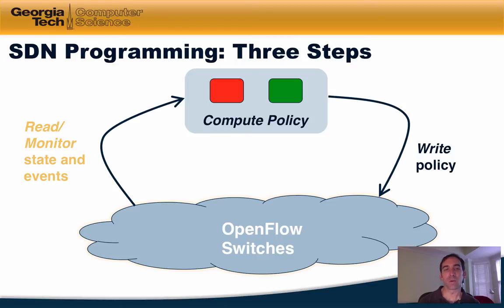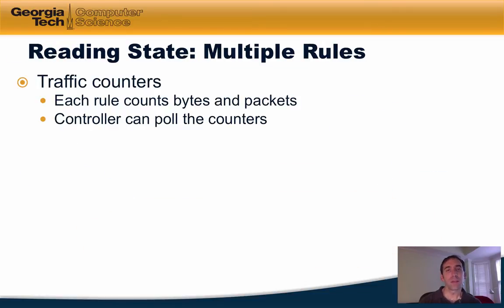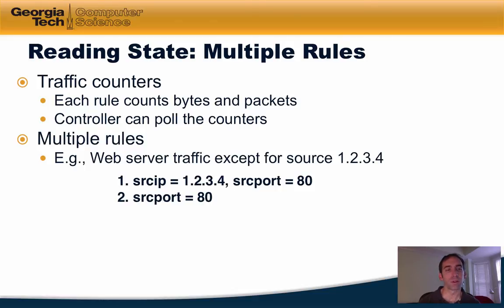In a later lesson, we will talk about how to extend the control framework so that it can also process and handle events. Reading network state typically involves processing multiple rules. Let's suppose that we have traffic counters, where each rule counts bytes and packets associated with a particular flow. The controller can pull those counters, but we might have a situation that requires the operator to express a policy in terms of multiple rules.